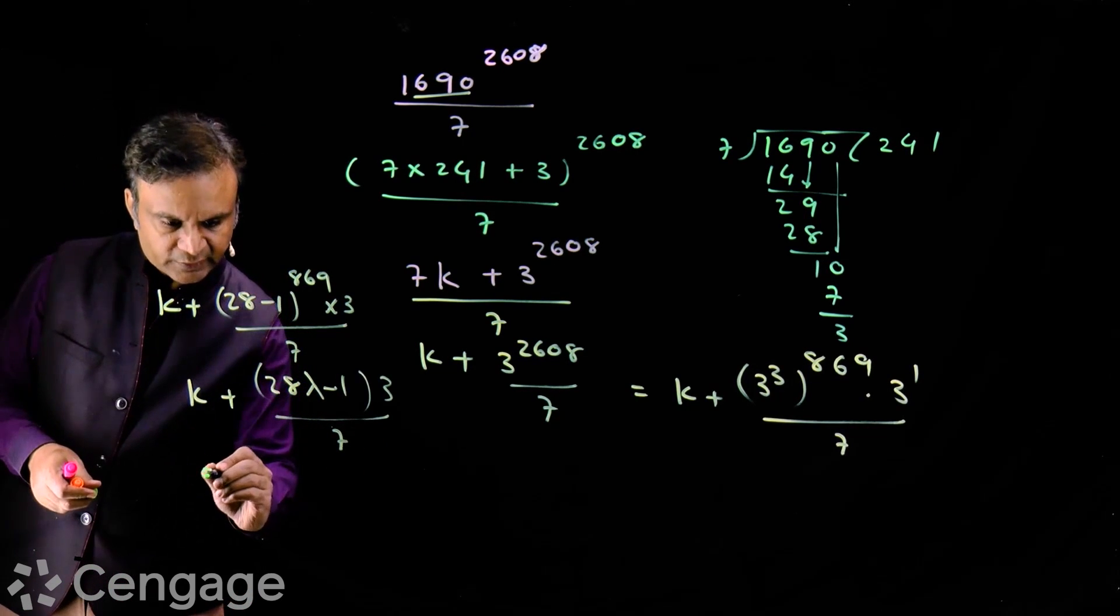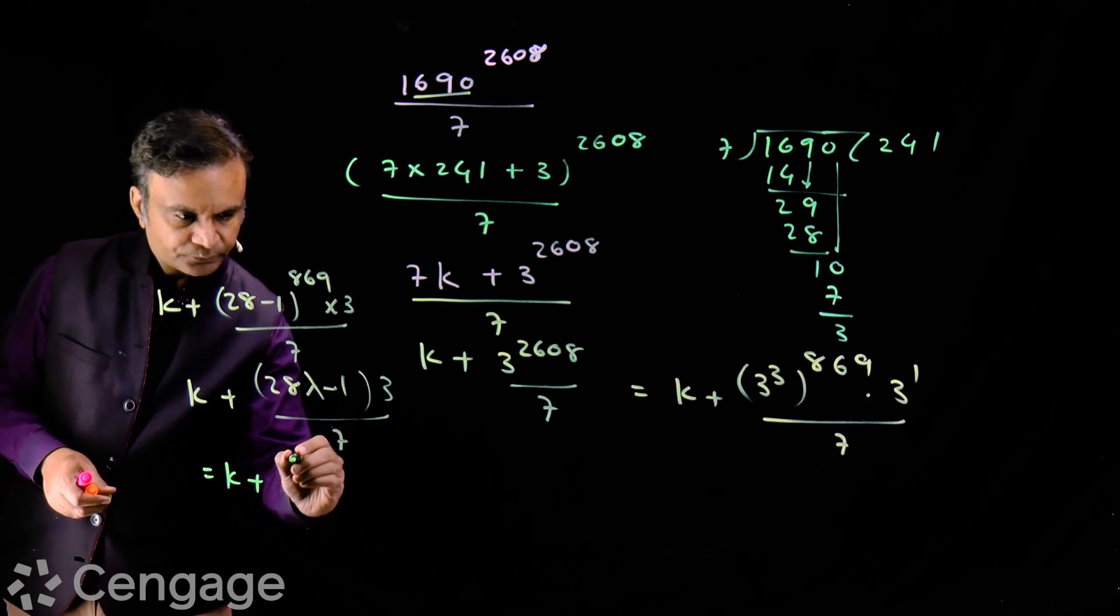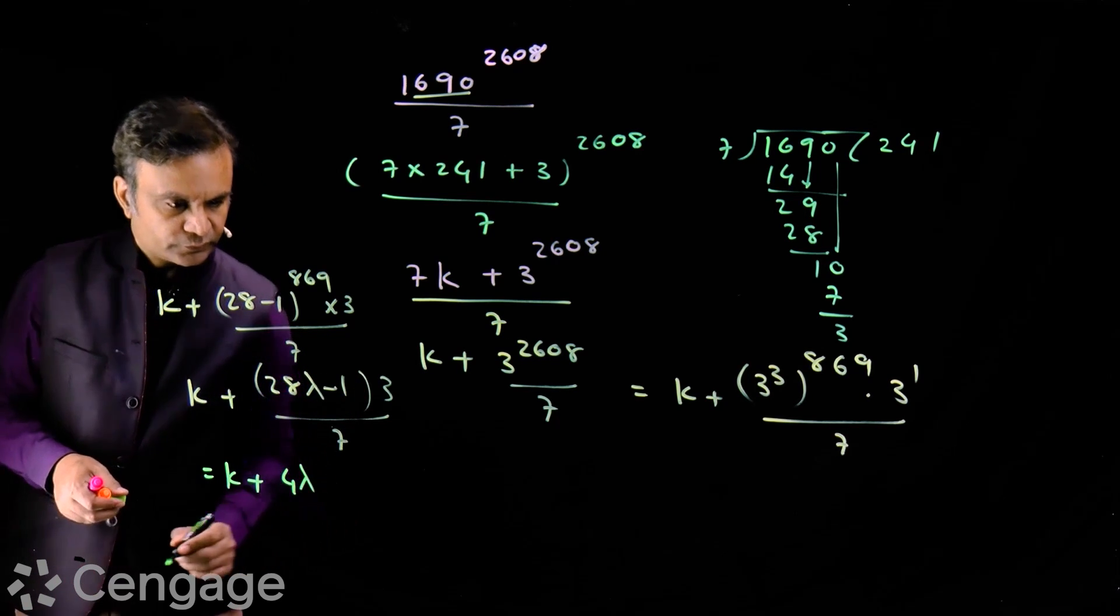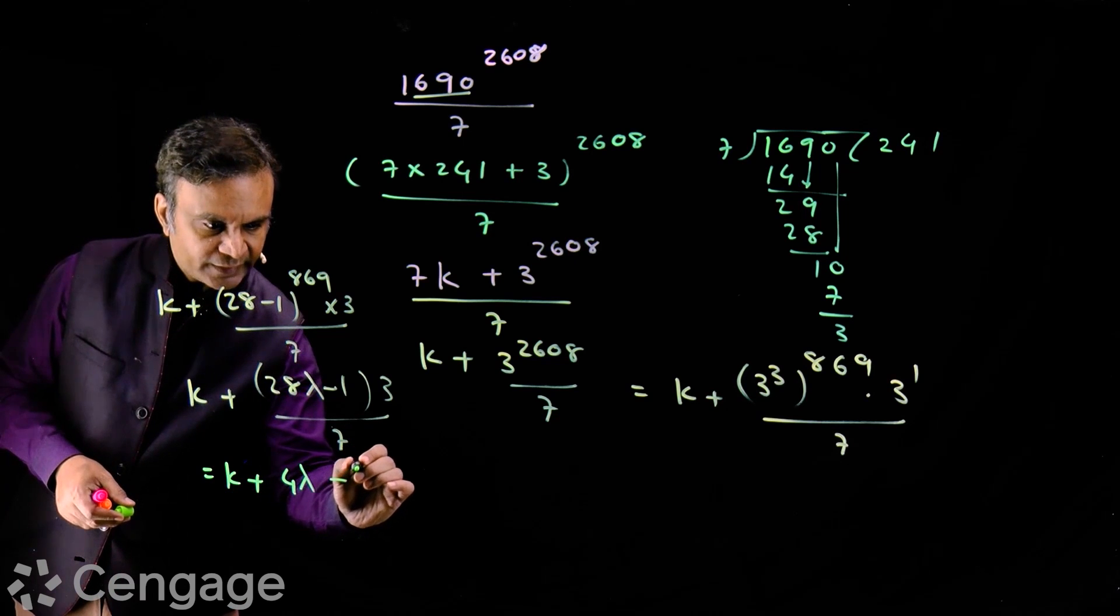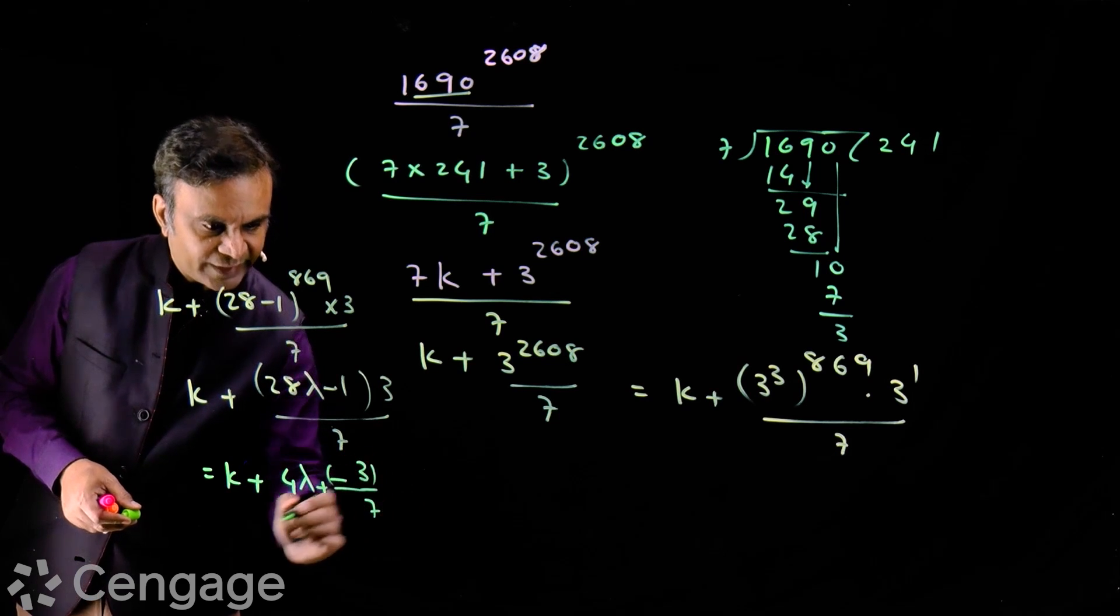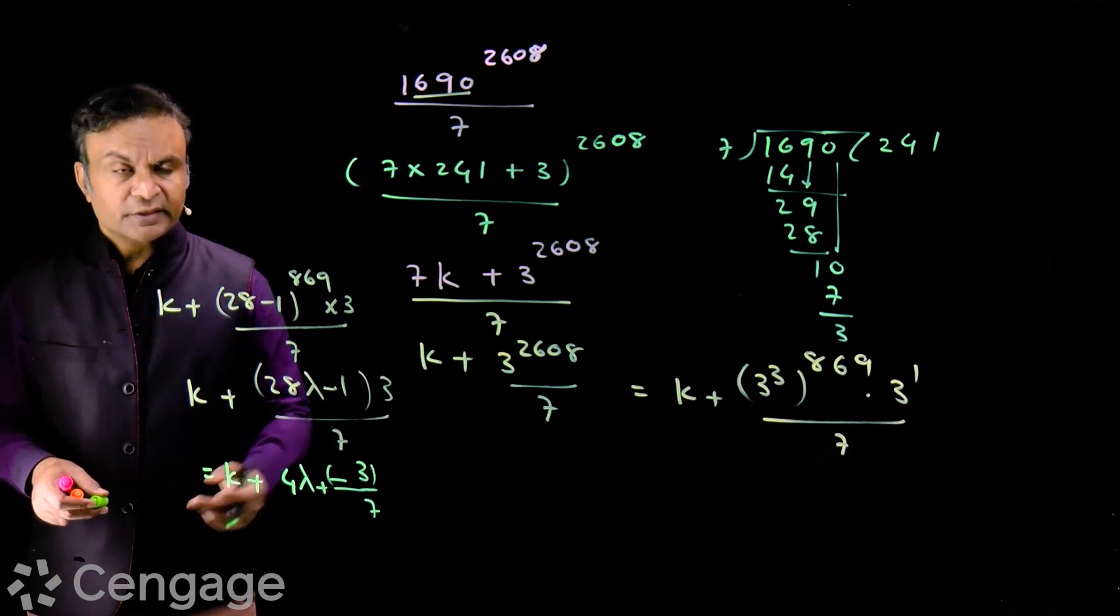Then we write like this: k plus 28 lambda by 7 is 4 lambda, minus 3 over 7. In fact we have plus minus 3 over 7. Then what is the remainder?